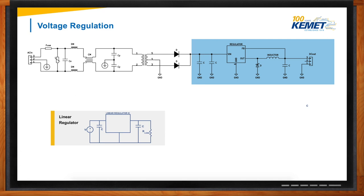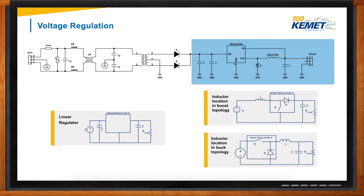A switching regulator is a voltage regulator that uses a switching element to transform the incoming power supply into pulse voltage, which is then smoothed using capacitors, inductors, and other elements. Power is supplied from the input to the output by turning on a switch — in this case a MOSFET — until the desired voltage is reached. Once the output voltage reaches the predetermined value, the switch is turned off and no input power is consumed. Repeating this operation at high speeds makes it possible to supply voltage efficiently and with less heat generation. There are mainly two different types of switching regulators: a boost regulator and a buck regulator. The boost regulator's output will be higher than its input, and the buck regulator generates a lower voltage from its input.